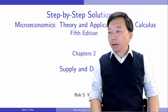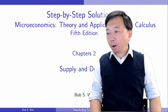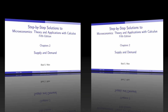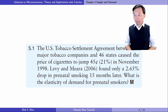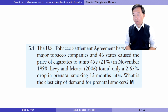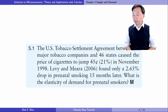Let's go to exercise 5.1. The US tobacco settlement agreement between the major tobacco companies and 46 states caused the price of cigarettes to jump by 21 percent in November 1998. There was a 2.65 percent drop in prenatal smoking 15 months later. What is the elasticity of demand for prenatal smokers?